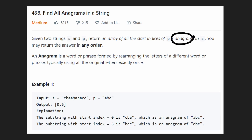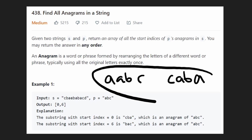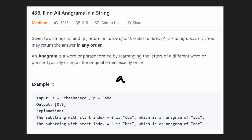An anagram means that two strings have the exact same count of each character. For example, the string ABC is an anagram of CAB because they each have one C, one A, and one B. If you add an A to both strings, they're still anagrams — now they each have two A's, one B, and one C. So the counts are what determine if two strings are anagrams or not.